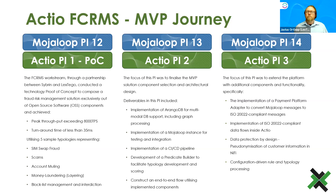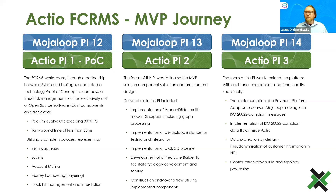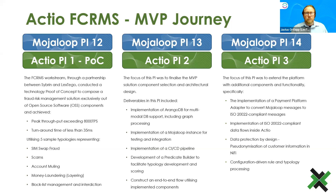In our current PI, the large theme was building the data rails and data pipeline. We wanted to implement Actio as an ISO 20022 compliant platform, so we built a number of processors and components to be ISO 20022 compliant from the API all the way through data preparation and our data evaluation pipeline. We also implemented data protection by design, enhancing data preparation routines with synchronization of customer information, and implemented a configuration-driven rule and typology processing design in our channel architecture.